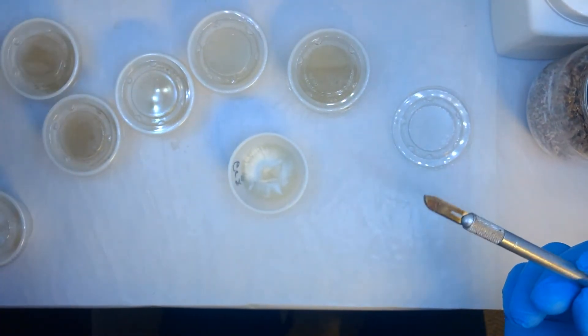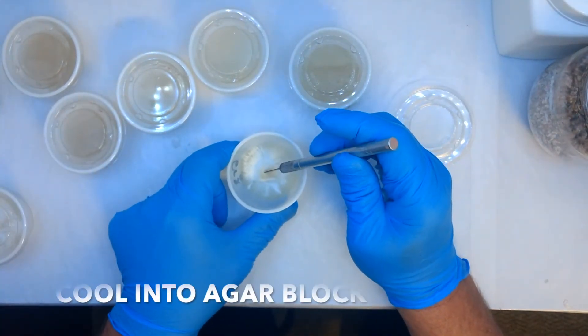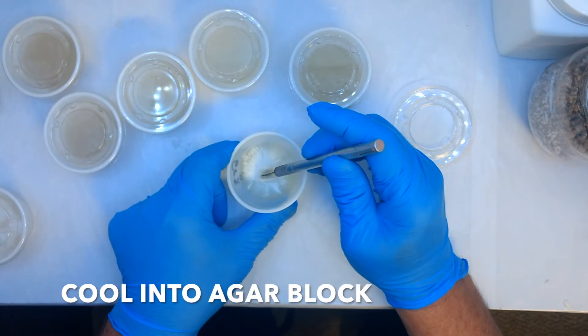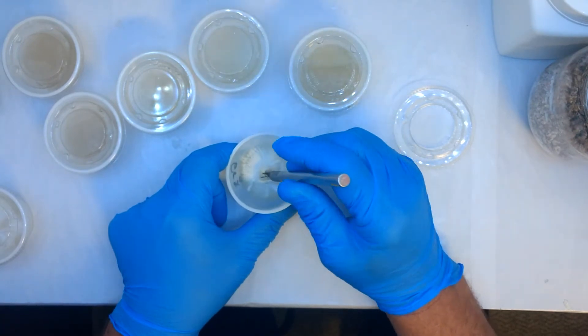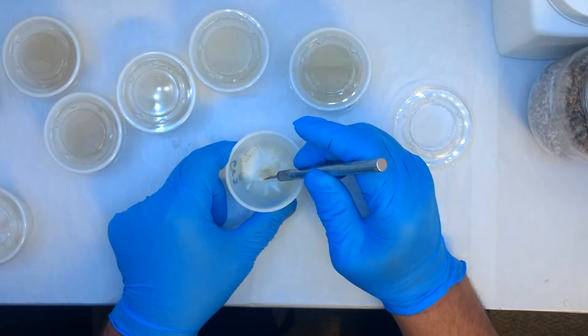What you want to do now is cool down the scalpel into the agar. I usually shove it into the top of the other agar. I can just hear the mycelium screaming. And then select where you're going to be cutting the agar out of.